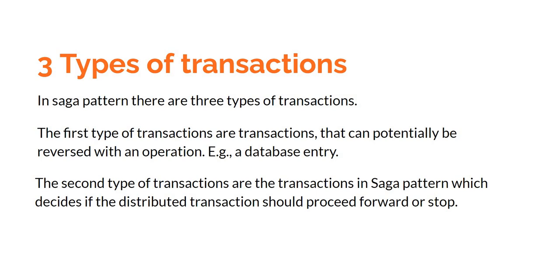The second type of transaction in Saga pattern decides if a distributed transaction should proceed forward or stop. For example, in the e-commerce case with order service, product service, and email service — the order service and product service are the no-go ones, meaning if they fail, there is no point in proceeding forward. Whereas for the email service, it might be okay to proceed forward even if it fails.